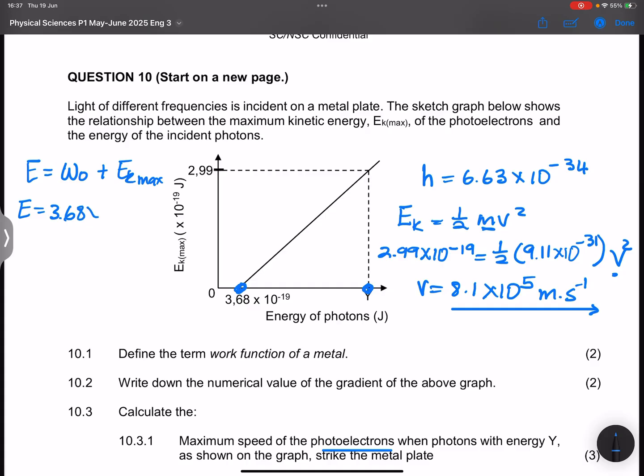Which means this is going to be 3.68 times 10 to the power minus 19, plus Ek max at Y, and that Ek max was given to us.